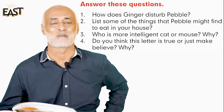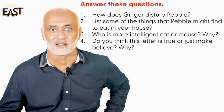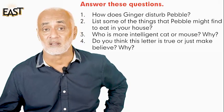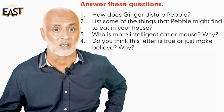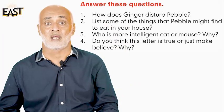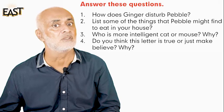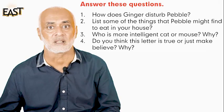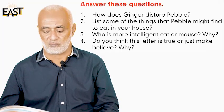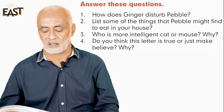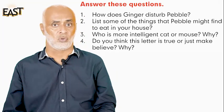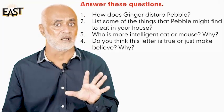Question number two: list some of the things that Pebble might find to eat in your house. Go in the kitchen, see what is there on the floor, in the dustbin, here and there, and write down all the things that Pebble might find in your house to eat, especially at night.